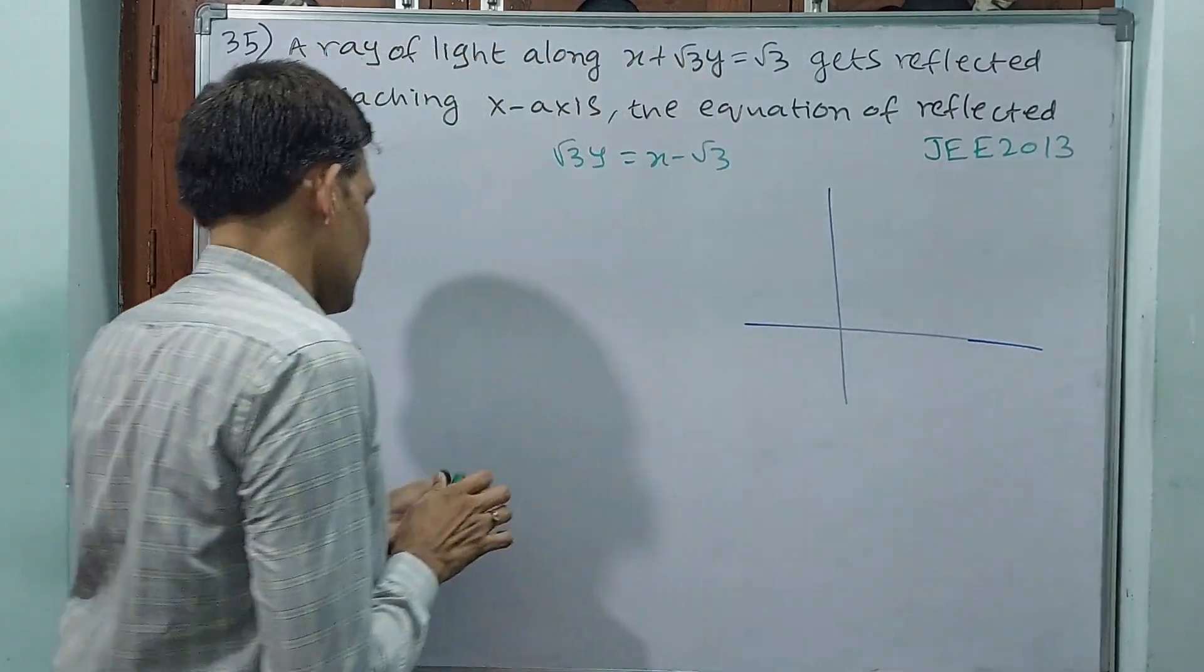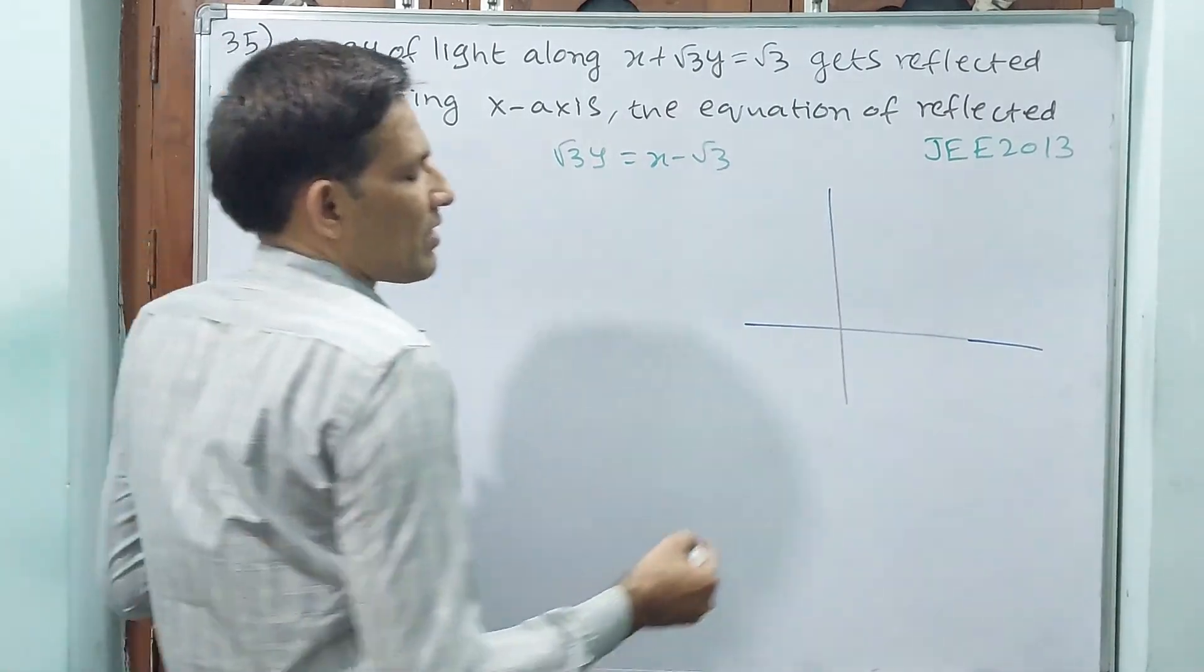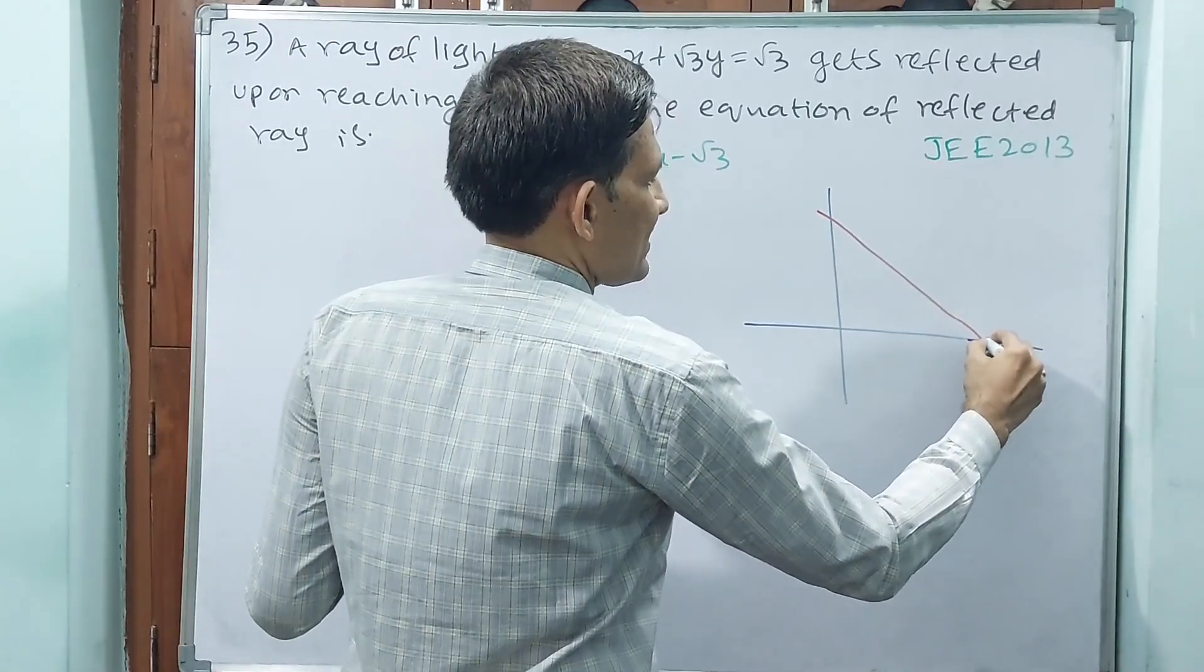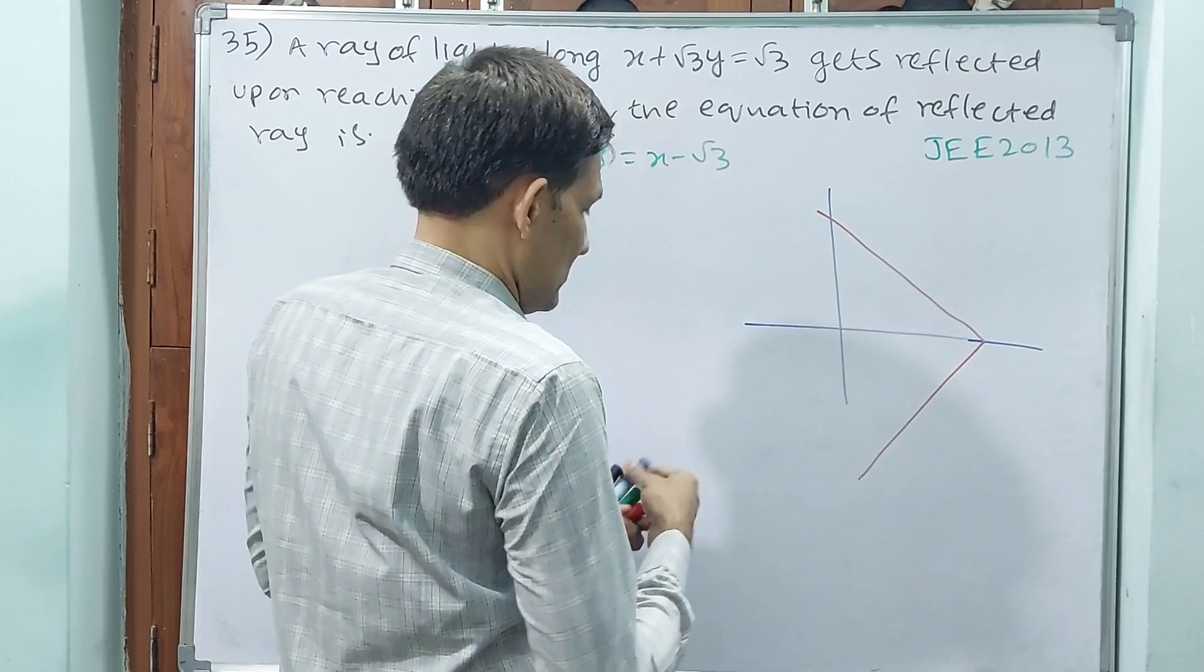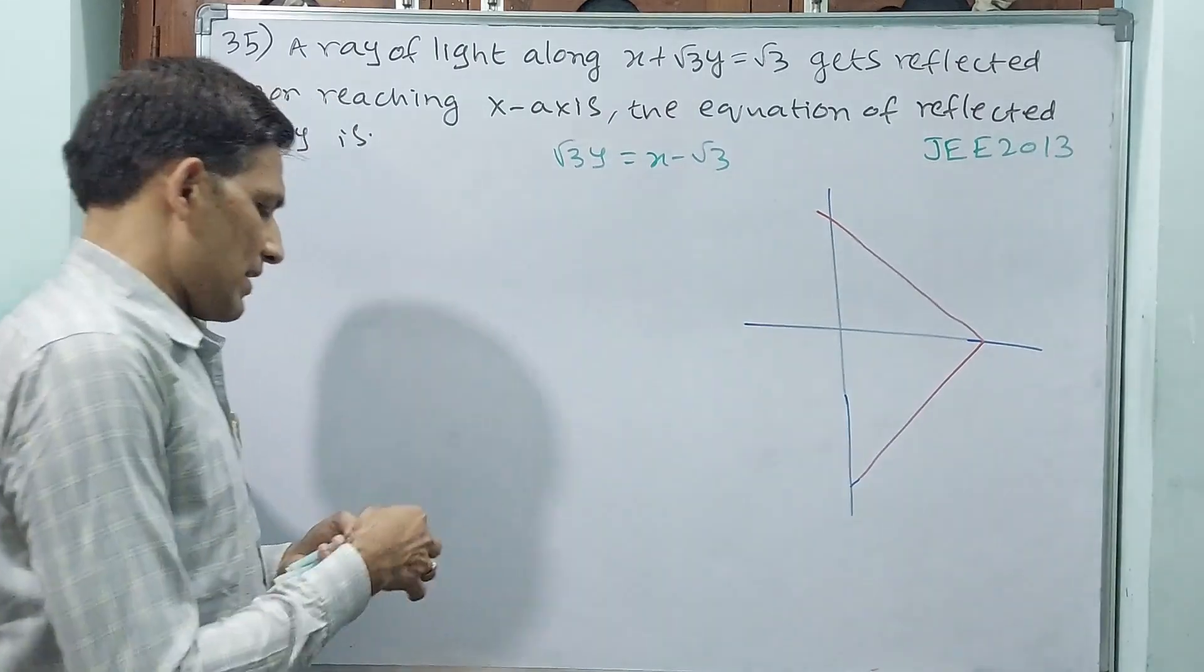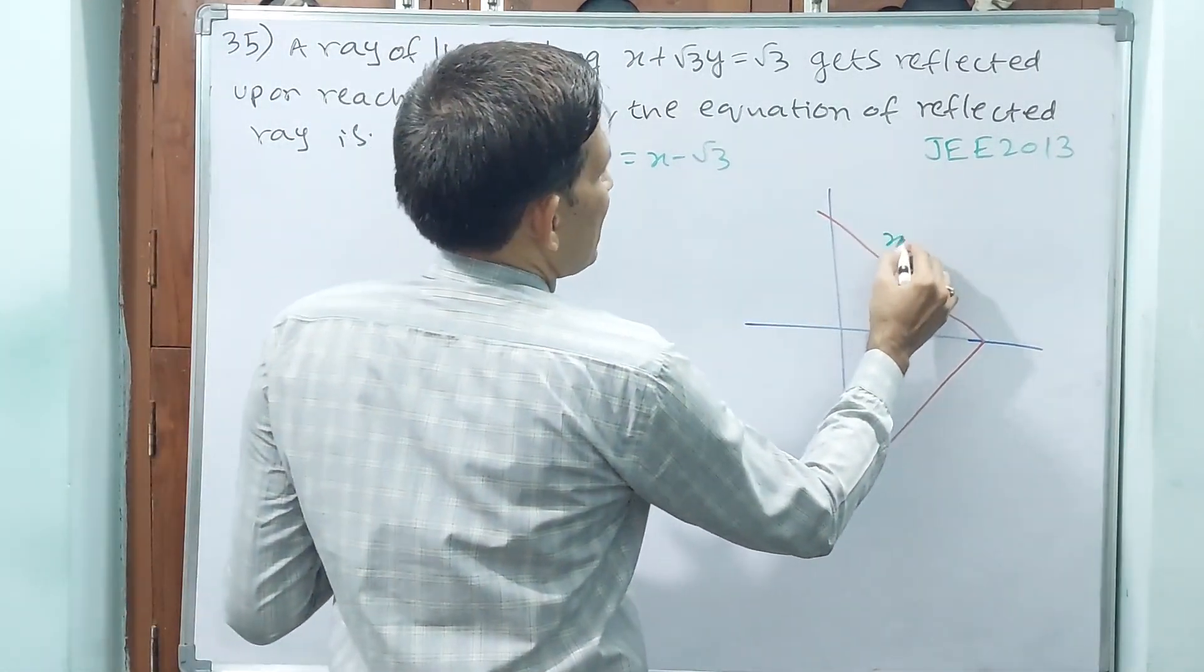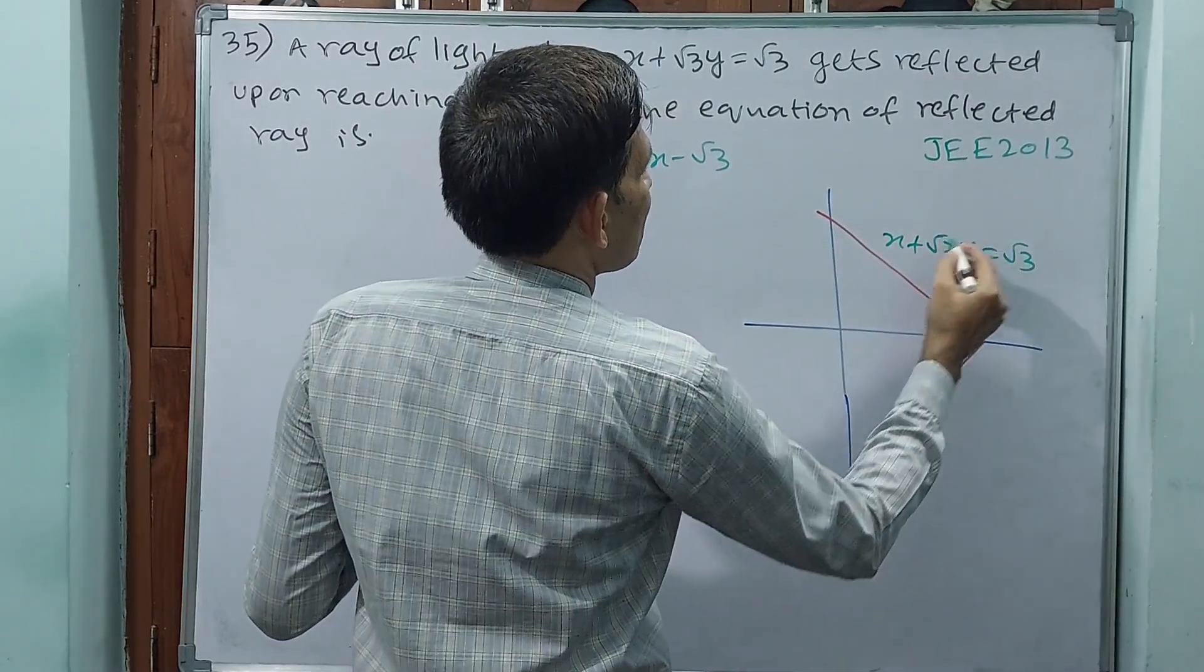What he wants to say: one line is there, upon reaching x-axis it got reflected. Now see what I want to say. This line is x plus root 3y equals root 3.